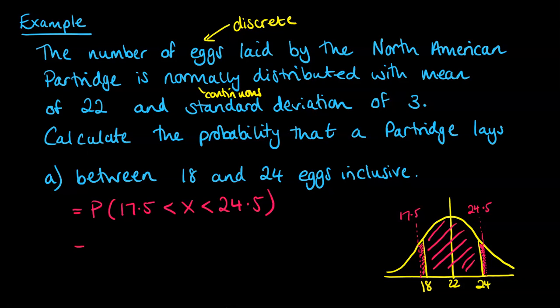OK, so I'm just going to pop that in the calculator. On my graphics calculator, I can put those values in straight away with our mean of 22 and our standard deviation of 3, and we get the answer of 0.7309.